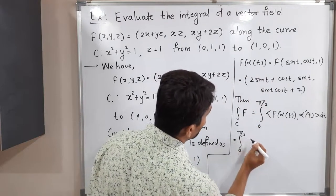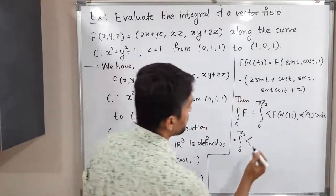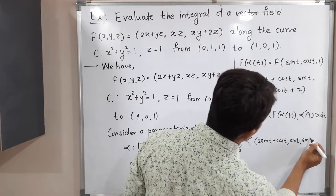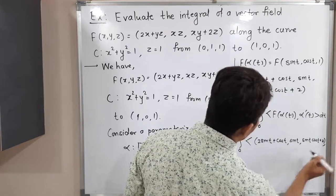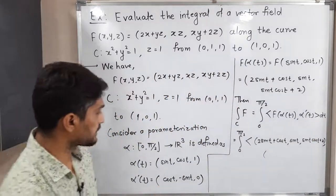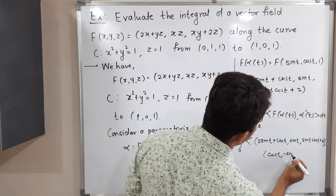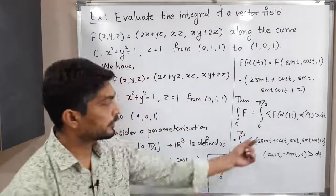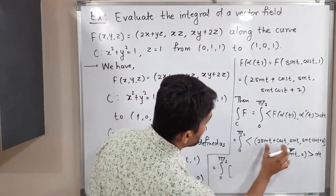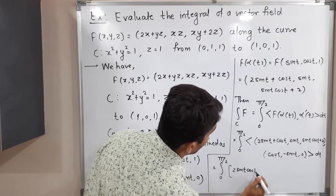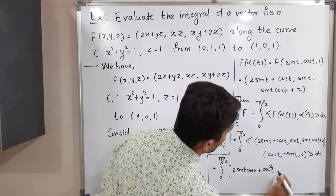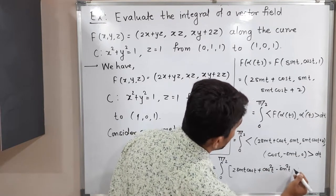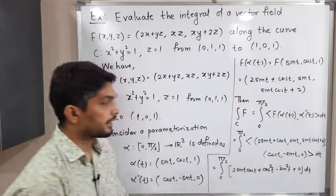Let us put all those values. f(α(t)) = (2 sin t + cos t, sin t, sin t cos t + 2) and α'(t) = (cos t, −sin t, 0). Taking the inner product: first component gives (2 sin t + cos t)·cos t = 2 sin t cos t + cos²t; second component gives sin t·(−sin t) = −sin²t; third component gives 0. So the integrand is 2 sin t cos t + cos²t − sin²t.